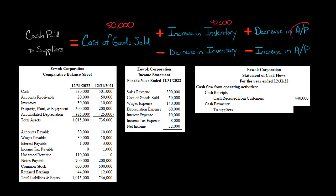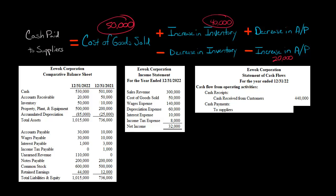Now we need to look at accounts payable, so that's a liability. We've got our accounts payable account right here, so it went from $10,000 to $30,000. That's an increase in accounts payable of $20,000, so that's going to be subtracted. So we've got $50,000 cost of goods sold plus $40,000 for the increase in inventory minus the $20,000 increase in accounts payable.